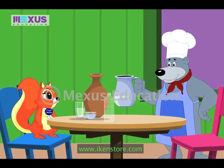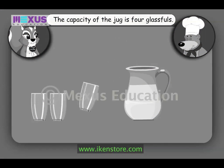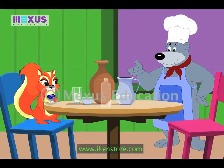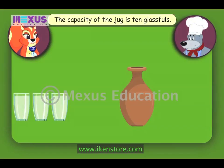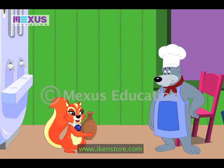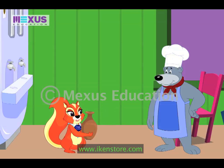Here is a jug, Amber. See how many glasses of water it can hold. It can hold only four glasses of water. That means the jug has four times the capacity of the glass. Let us try this earthen pot now. This can hold ten glasses. Looks like you have found the perfect container for your class. Thank you, Mr. Teddy. You have been quite helpful. Bye.